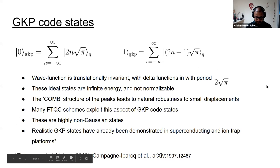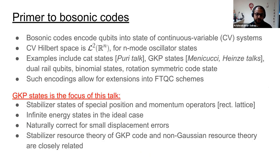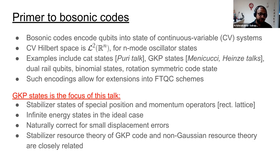A brief primer to bosonic codes: bosonic codes encode qubits into continuous variable systems. CV systems have a Hilbert space that is just the space of square integrable functions on the real line, depending on the number of modes — it's R^n. Examples of bosonic codes include cat states, which we just heard a very good talk about from Puri. We'll be focusing on GKP, along with Menikuchi and Heinze. Other codes include dual rail, binomial qubits, and the rotation symmetry code from Grimsmo et al., which connects cat states, binomial qubits, and so on in a generalized framework.